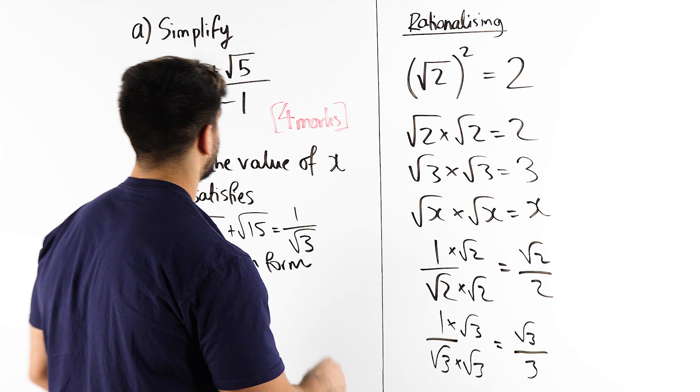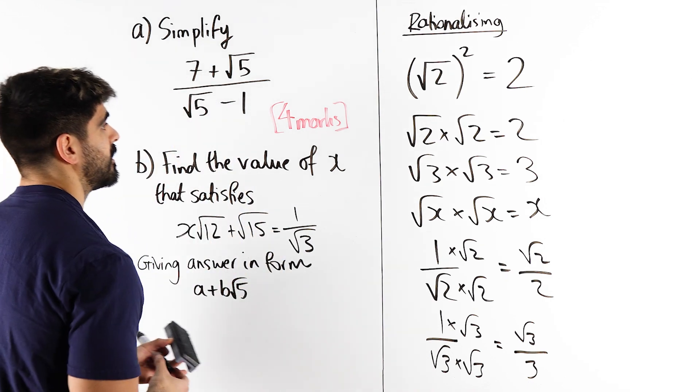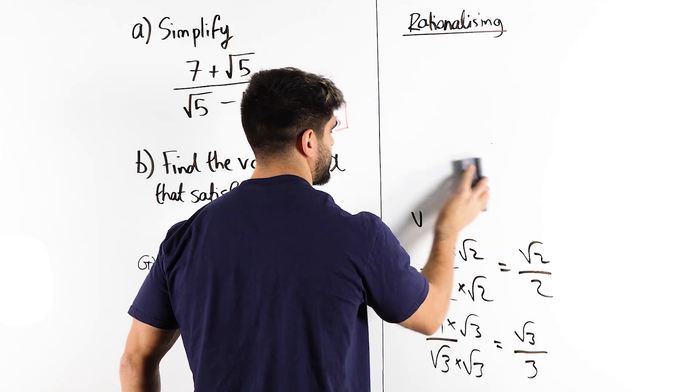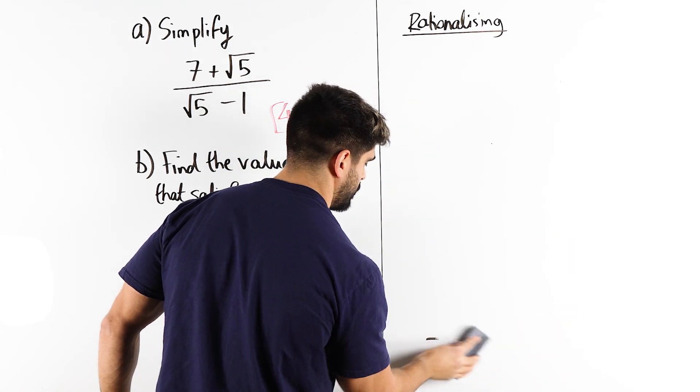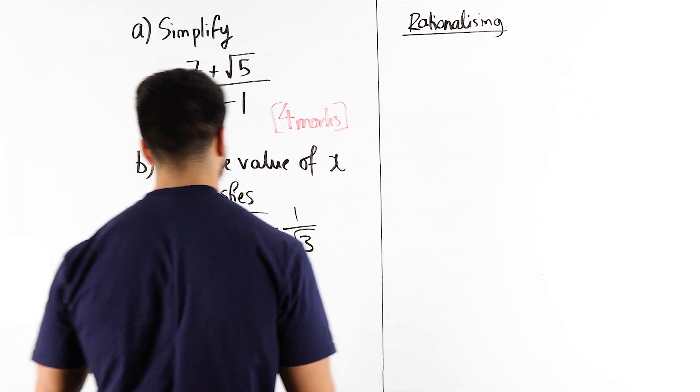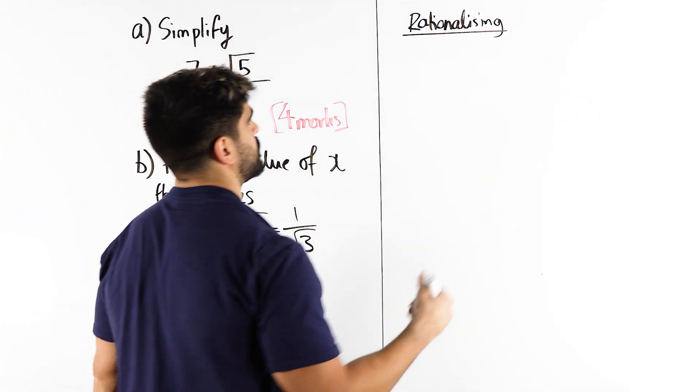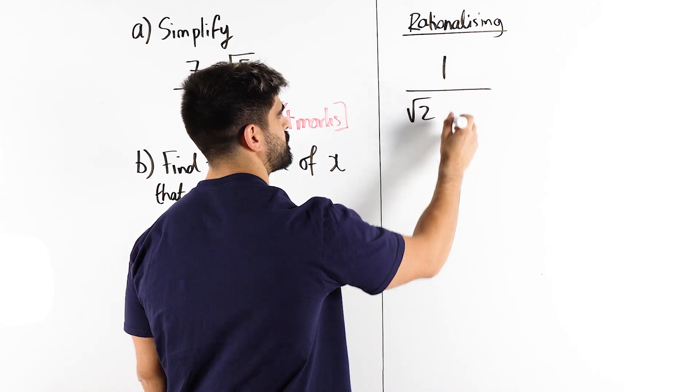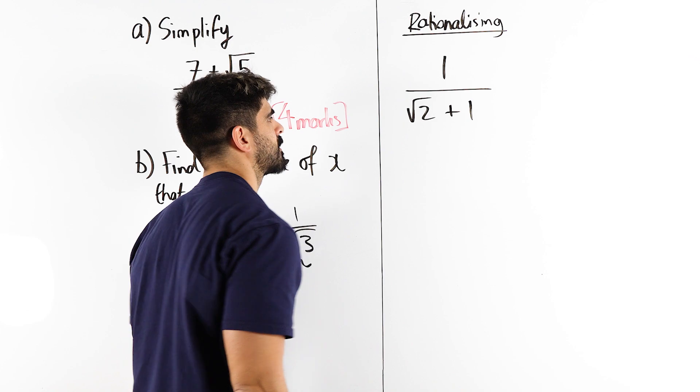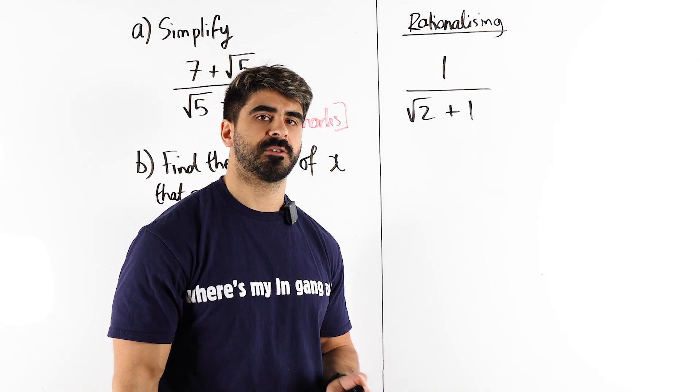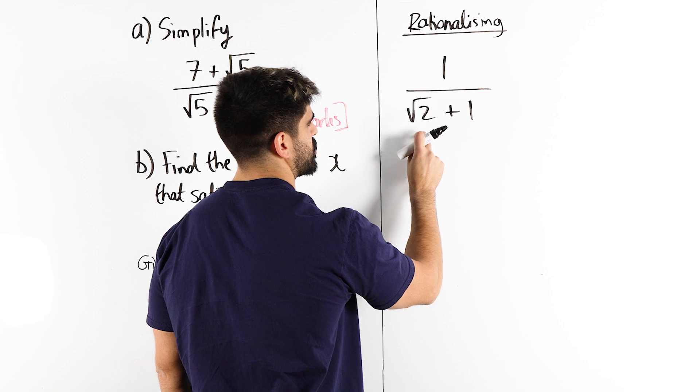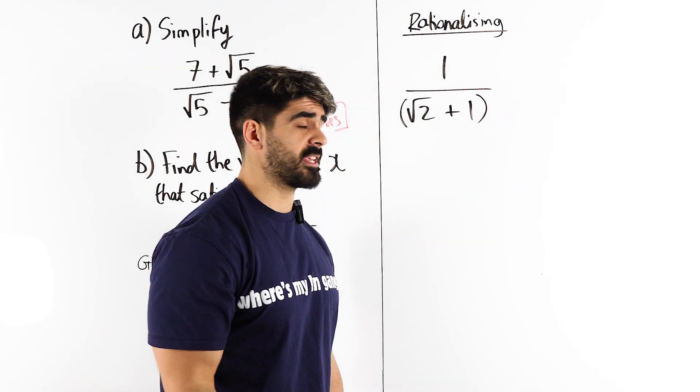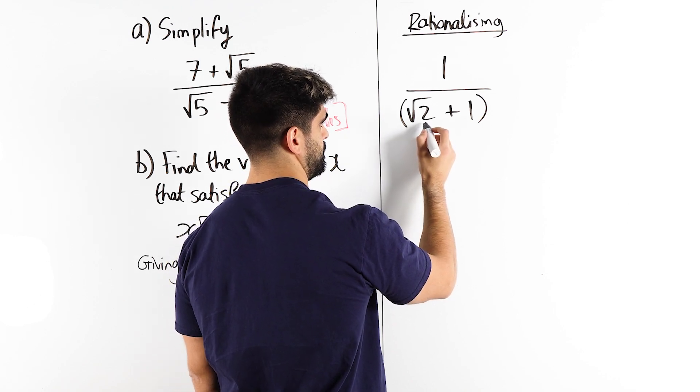But what happens when we have a couple of terms over here? Well, things change slightly and we need to use a different concept. And it's a very simple concept, one that you are probably familiar with. It's known as the difference of two squares. So say I took 1 over root 2, but then I just put plus 1. On initial observation, you might think, oh, I need to multiply by root 2 again, because I want to rationalize this bit. But, we would need to protect this with a bracket because you can't just multiply this single term by root 2 when there's two terms here.